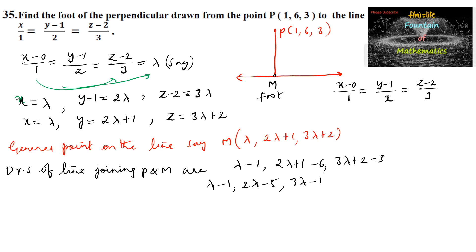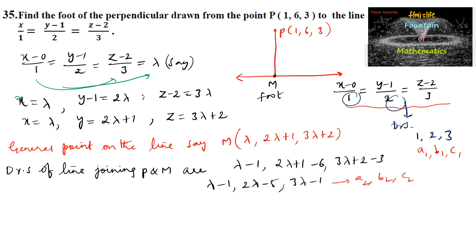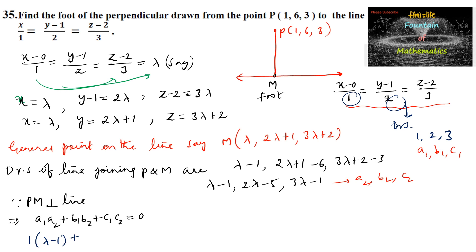These are the direction ratios of line PM, and we also know the direction ratios of the given line are 1, 2, and 3. Let us call these a1, b1, c1 and a2, b2, c2 respectively. Since PM is perpendicular to the line, we can say that a1·a2 + b1·b2 + c1·c2 = 0.